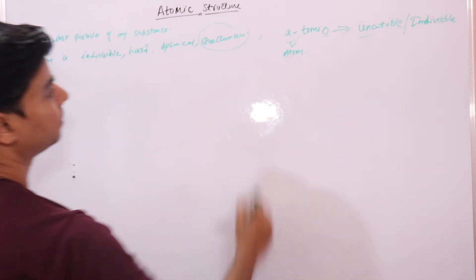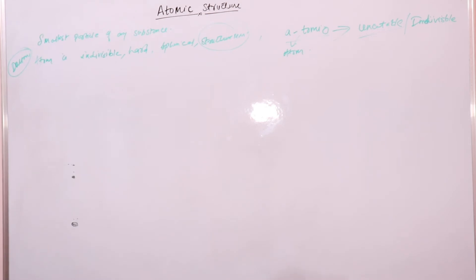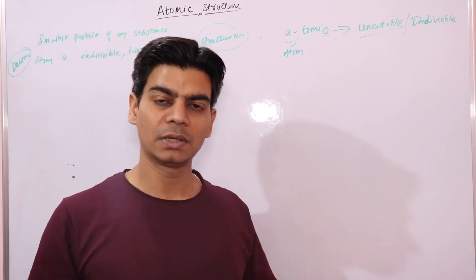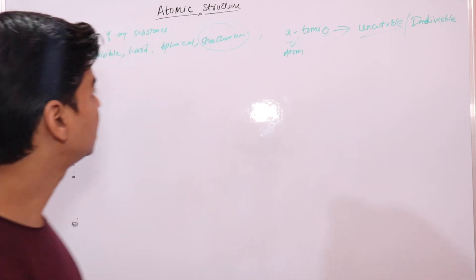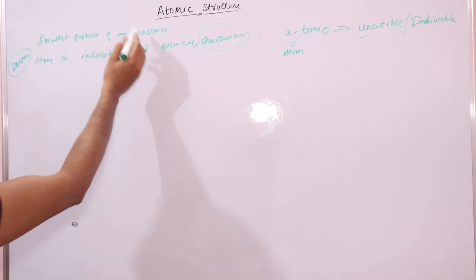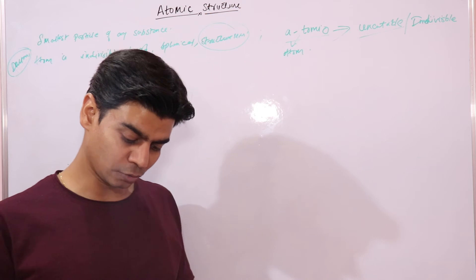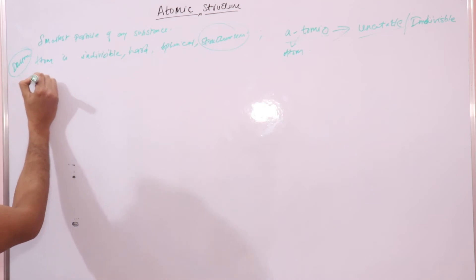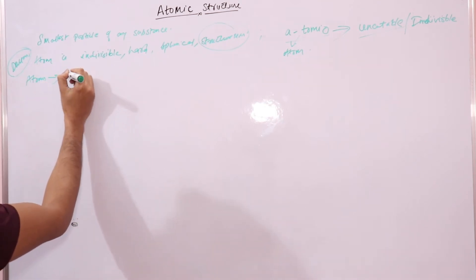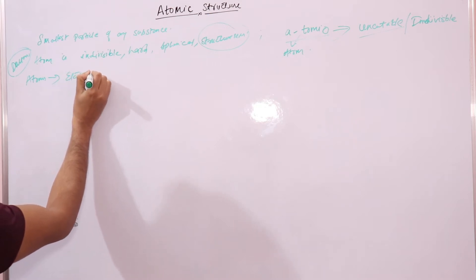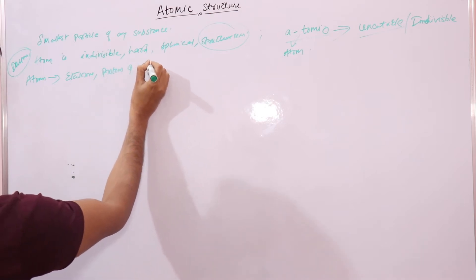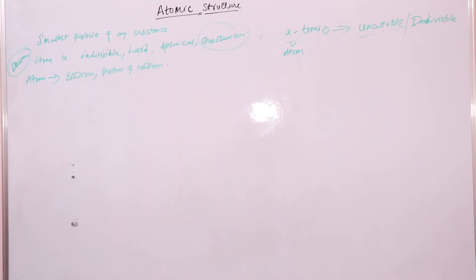Later research done by scientists proved that atom consists of further smaller particles. Atom consists of electrons, protons, and neutrons. We are already familiar with these particles from our previous classes.